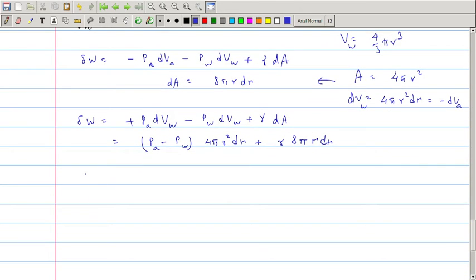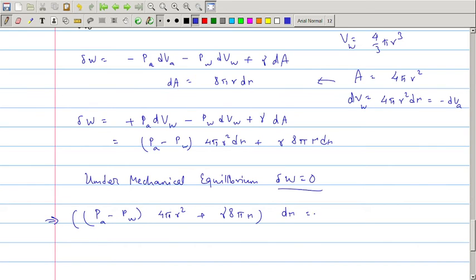Under the conditions of mechanical equilibrium, delta W will vanish. So Pa minus Pw times 4 pi r square plus gamma 8 pi r equal to 0. This will give 2 gamma by r is equal to Pw minus Pa. Let us call this delta P.